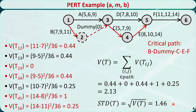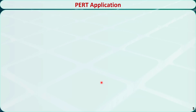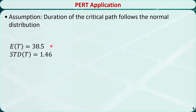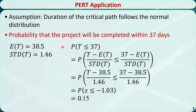The standard deviation is the square root of the variance, which is equal to 1.46. After we get the expected duration and the standard deviation for the critical path, we can find the probability that the project will be finished within a certain number of days. Assume the duration of the critical path follows the normal distribution with a mean of 38.5 days and standard deviation of 1.46. The probability that the project will be completed within 37 days can be calculated by converting to a standard normal distribution with mean 0 and standard deviation 1. You can look up the normal distribution table, or use online tools or a programming language to find the probability. It is 0.15, meaning the chance of finishing the project within 37 days is 15%.